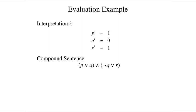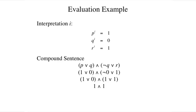Here is a simple example. We start with a formula and a truth assignment for a language with three proposition constants. We replace the constants in the formula with their truth values. We replace the negation by its value — in this case one, or true. Next we replace the two disjunctions with their values, both one. Finally, we evaluate the conjunction to get a value for the entire sentence.